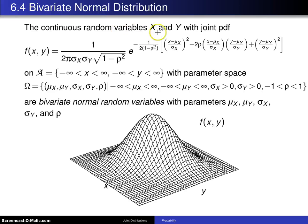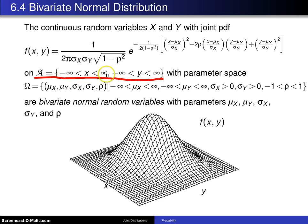The continuous random variables X and Y have a joint PDF, and this is by far the longest functional form for a probability density function that we've seen so far. But first, before we get to that, let's look at the support: X and Y values can go from negative infinity to positive infinity, so the real plane is the support.